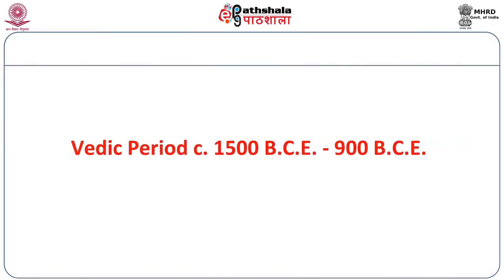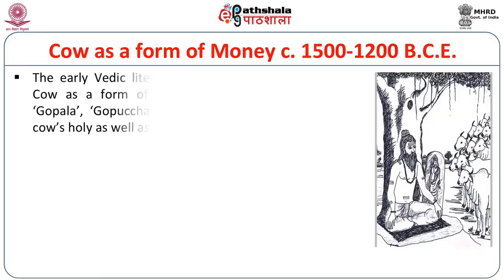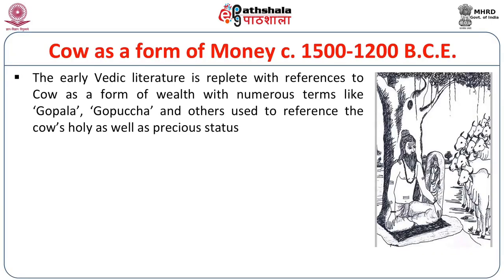The basic idea of Harappan money is that creating an object or function which becomes an object of value makes it a kind of money. In the wider Vedic era, lasting from 1500 BC, early Vedic literature is full of references to the cow as a form of wealth. Terms like Gaupal, Gaupuch, and the reference to daughter as Duhitri — one who milks the cow — give us an idea of how important the cow was to the Vedic people.